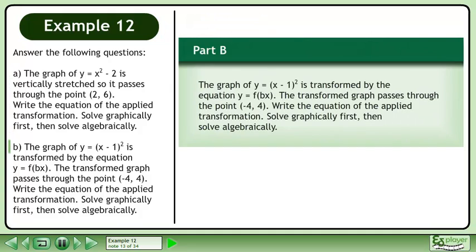In part b, the graph of y equals x minus 1 squared is transformed by the equation y equals f(bx). The transformed graph passes through the point. Write the equation of the applied transformation. Solve graphically first, then solve algebraically.